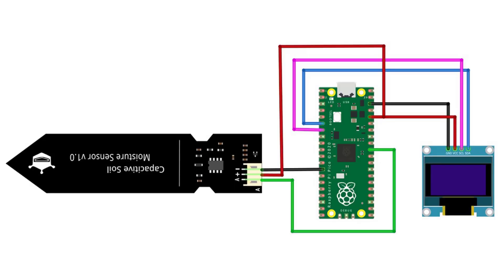The first step is to connect the capacitive soil moisture sensor to the Raspberry Pi Pico. Connect the VCC pin to 3.3V, the ground pin to GND, and the analog output pin to the GP26 pin on the Raspberry Pi Pico.